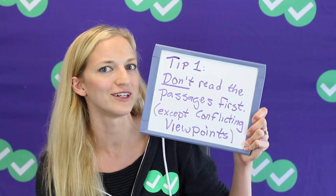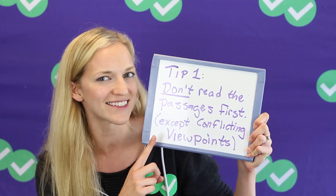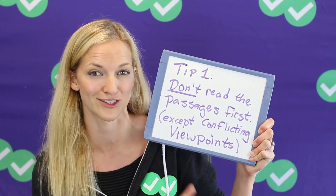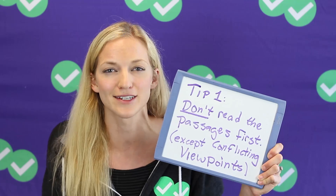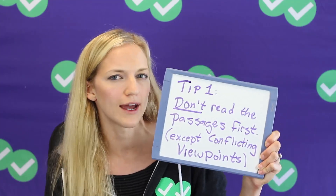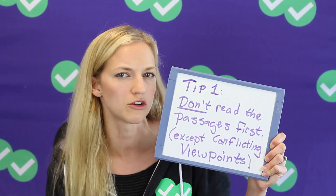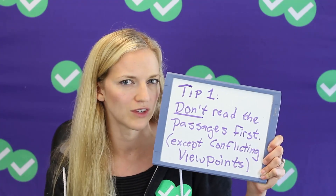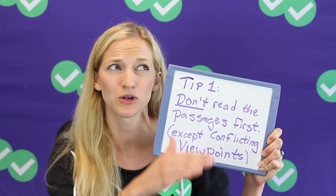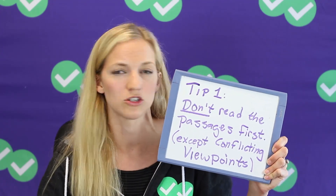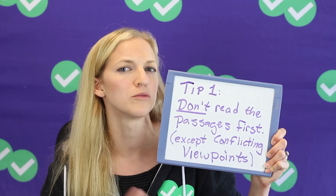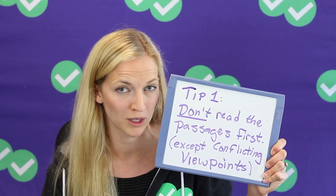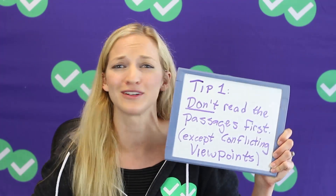Tip number one: don't read the passages first, unless it's the conflicting viewpoints passage. There is one passage on each ACT science section that you do have to read first — the one where you have two scientists, two students, or two theories being debated and you have to answer questions on those. That one is pretty much all reading; you won't see many charts, figures, or diagrams on it. So once you get familiar with the test, you'll know right away which one it is. That one you do have to read. The rest of them — don't read them first.